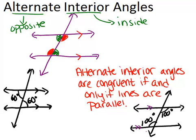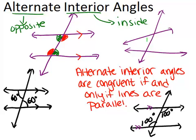The last thing to keep in mind is that even if the lines are not parallel, they're still considered alternate interior angles. So if we had two lines that are clearly not parallel — because they would intersect — and a transversal, these angles are still considered alternate interior angles; they're just not congruent. We tend to focus on situations where lines are parallel or alternate interior angles are congruent, because that's when it gets interesting.